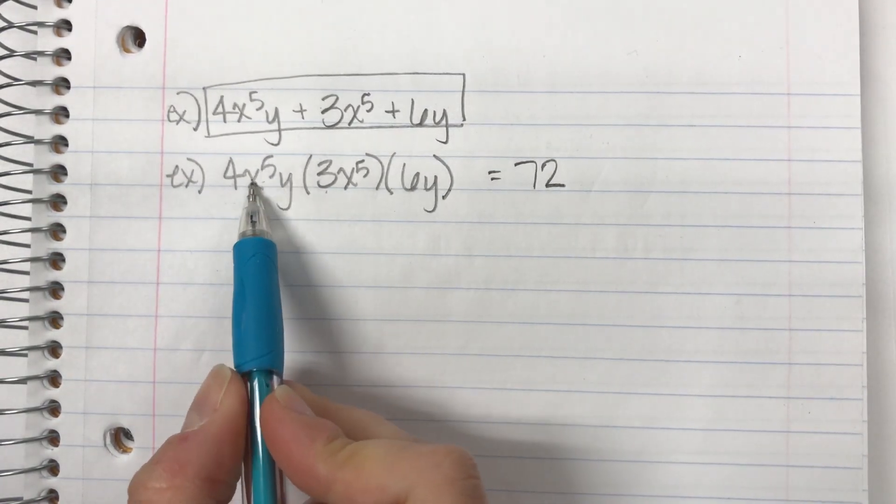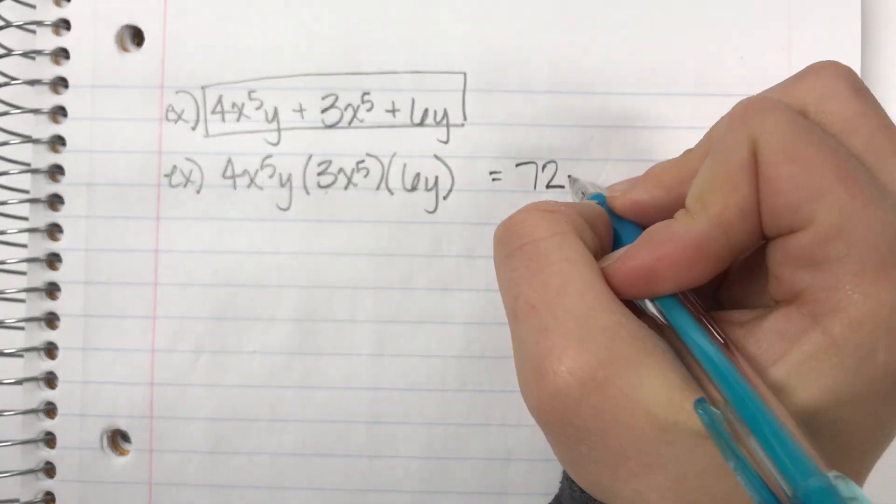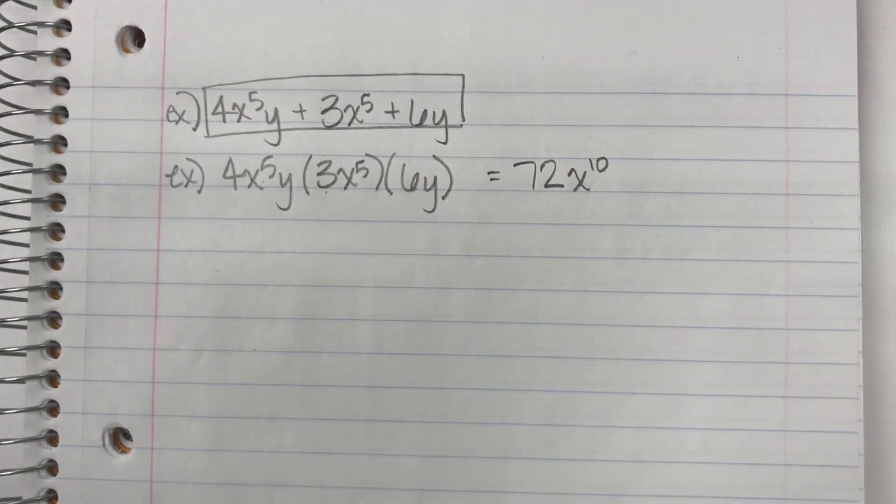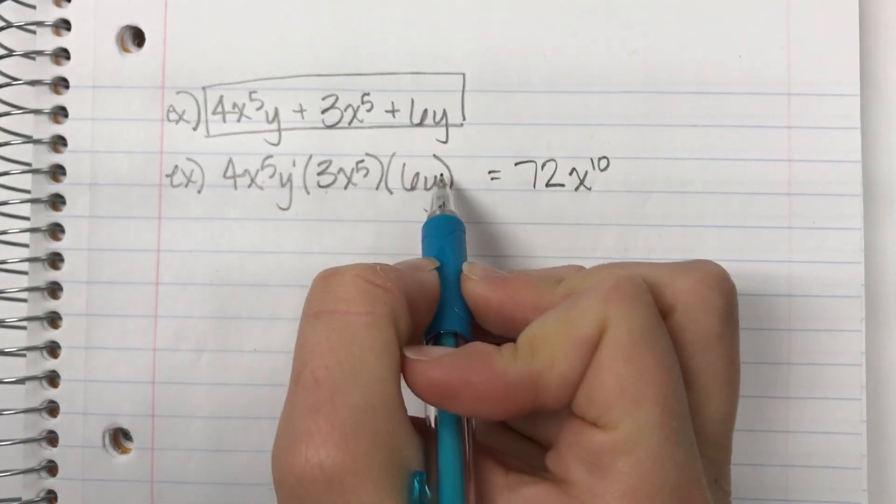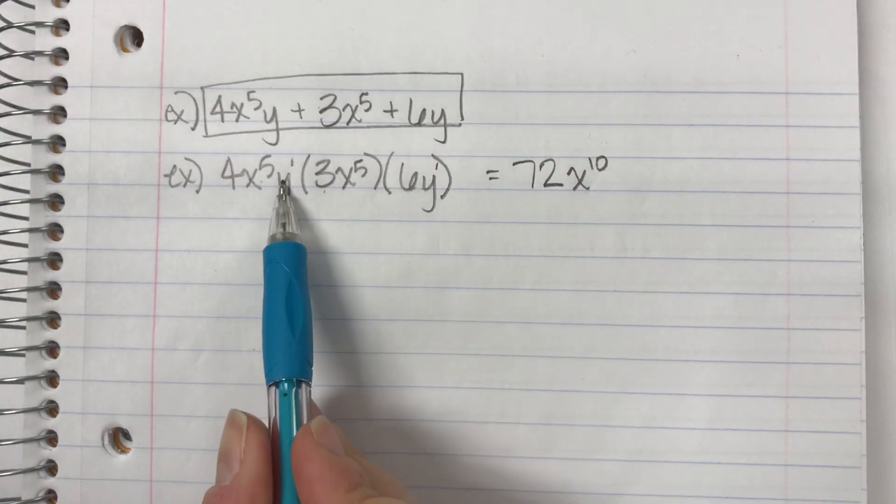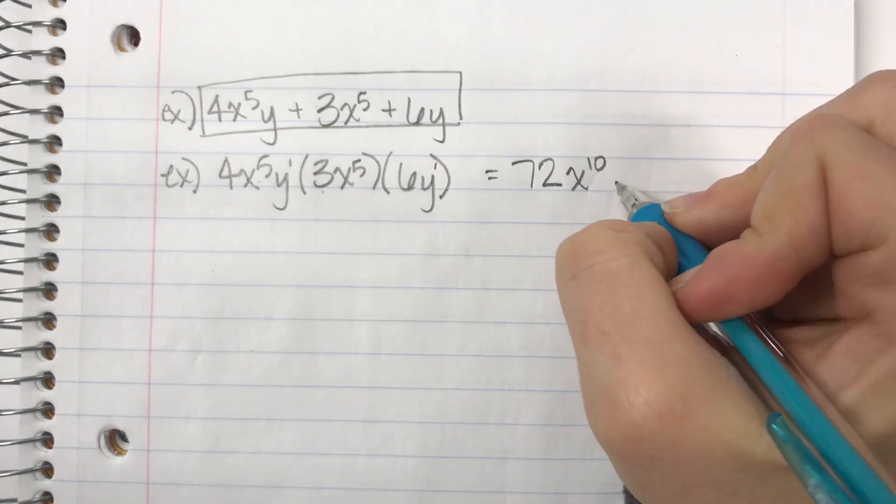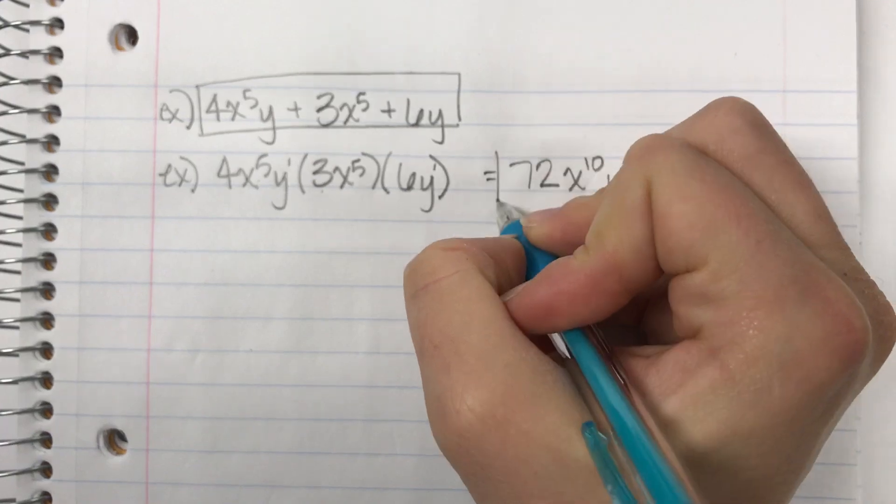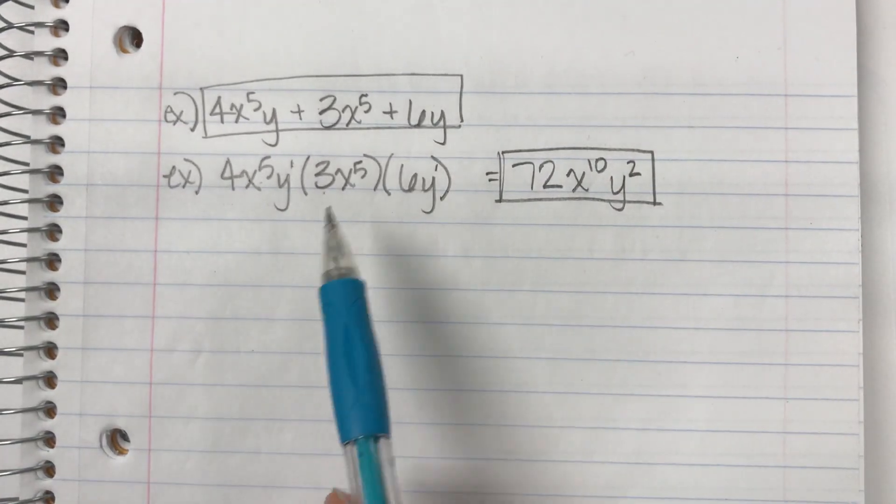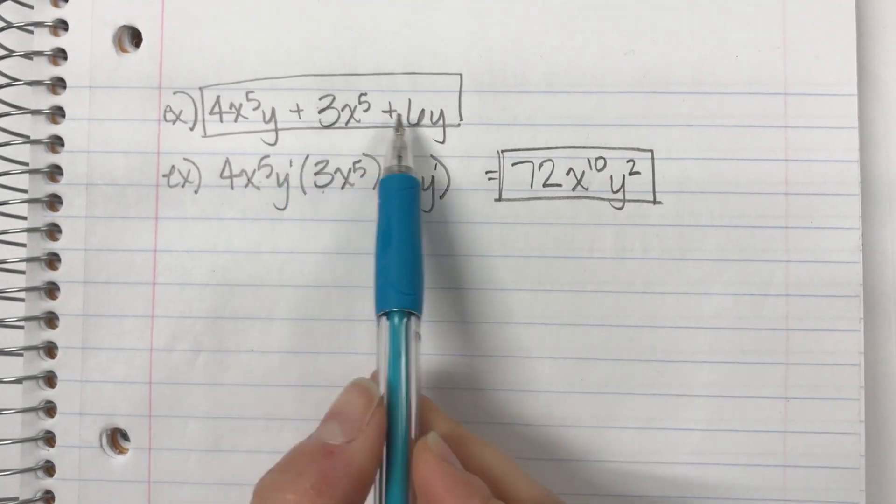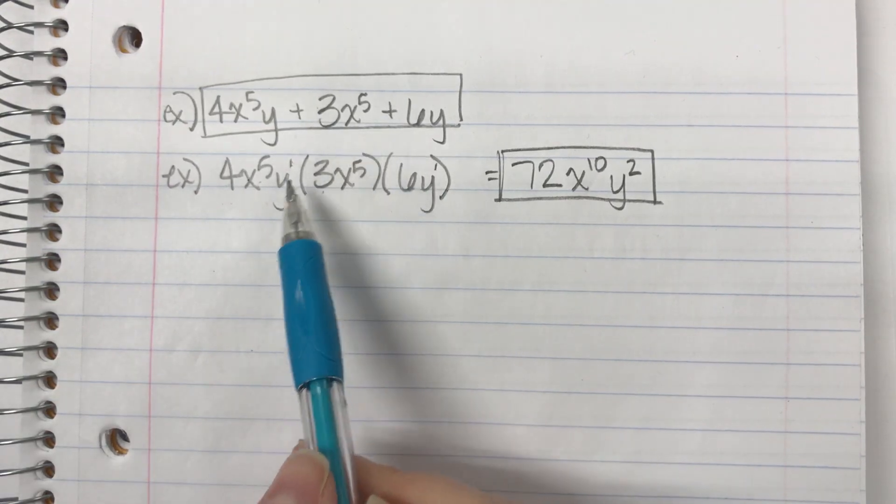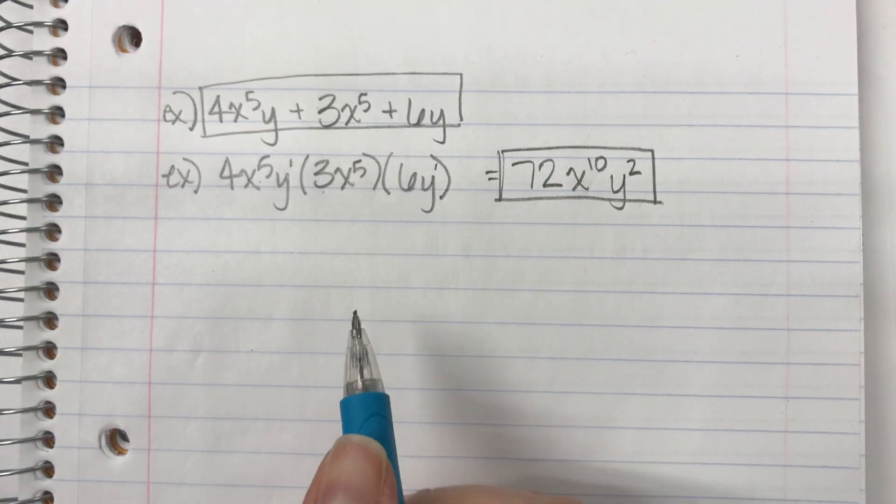If I combine exponents with the same base, I get x to the 10th. And then my y's, I'm going to go ahead and put one exponent on there. So when I add those matching exponents, I get y squared. So again, two different situations. You've got to get them straight in your head. When there's subtraction and addition involved versus when there's multiplication, the rules are different.